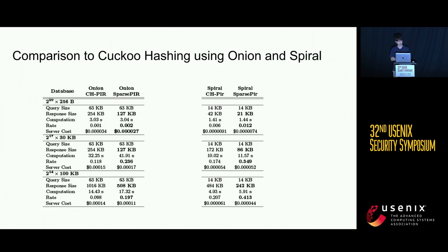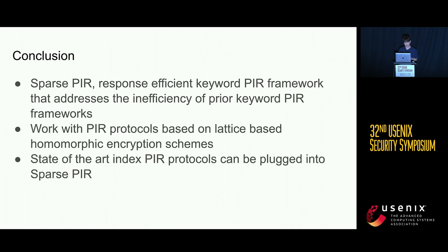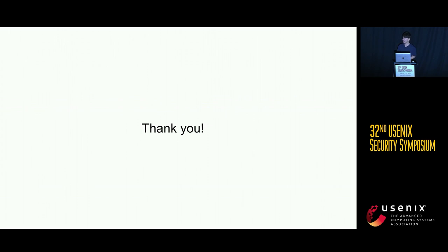For experimental evaluation, the key takeaway is that plugging our keyword PIR scheme into Onion or Spiral — the state-of-the-art index PIR schemes — gives a keyword PIR framework with half the response size of the cuckoo-hashing-based framework, while only incurring a slightly increased computational overhead. In conclusion, we present our sparse keyword PIR framework, which works with most PIR protocols. Experimental evaluation shows that our framework is practical. Thank you.